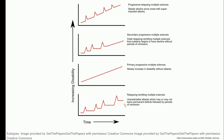The other types include primary progressive, where it just keeps getting worse with really no flares. And then the worst type is progressive relapsing multiple sclerosis, where it just keeps getting worse and worse, and in addition to that they have flares along the way. Patients can experience more than one of these types.